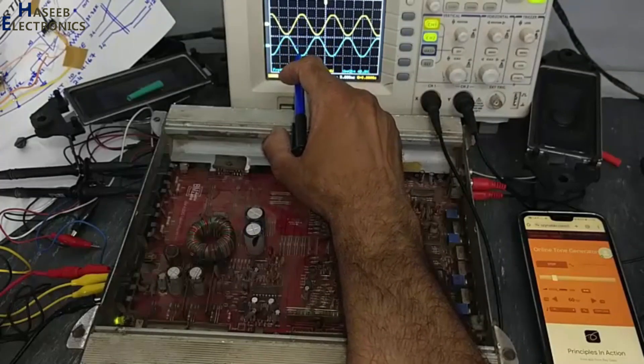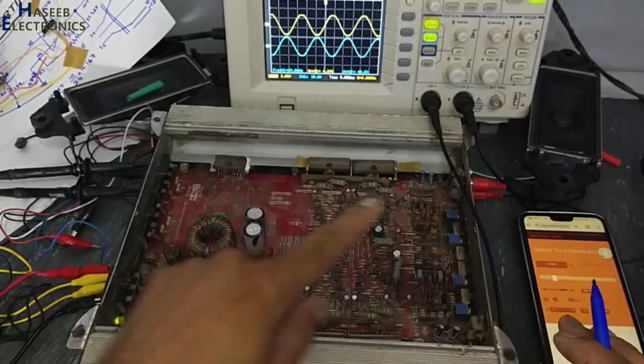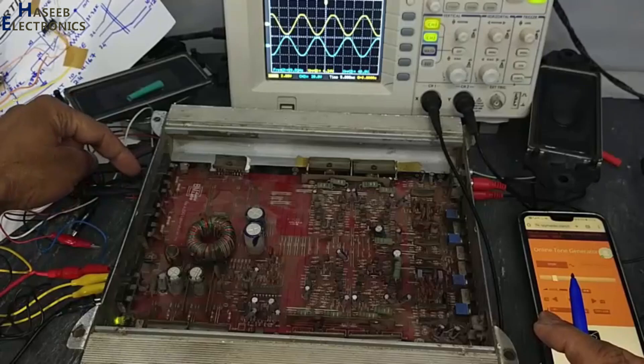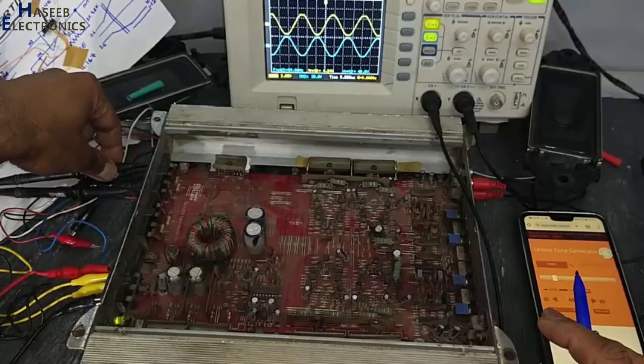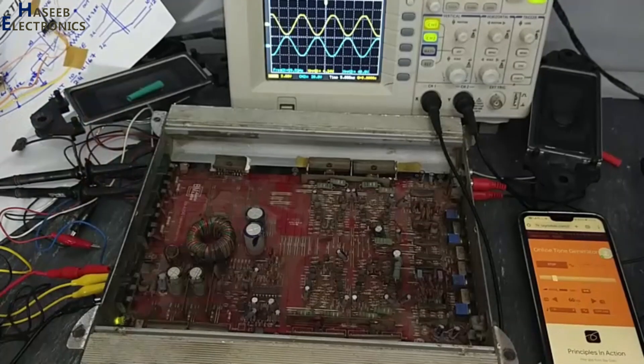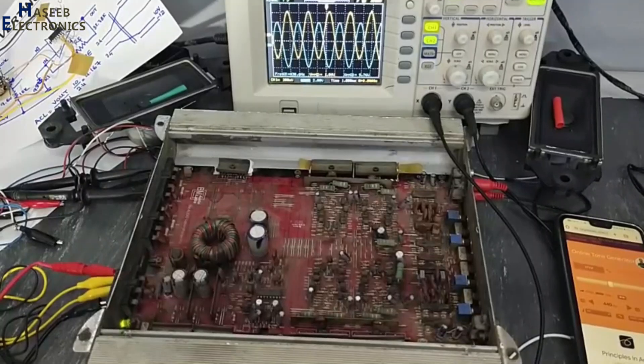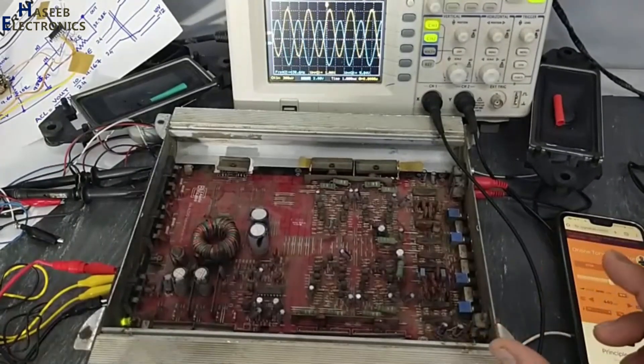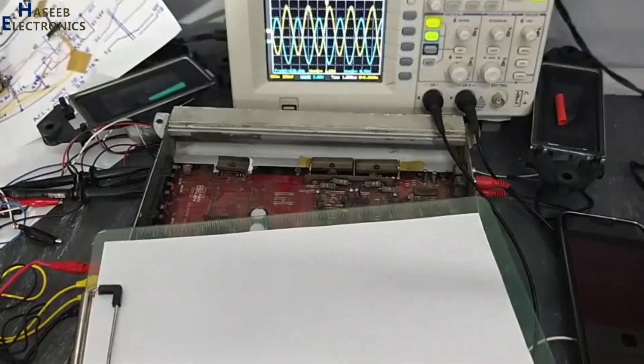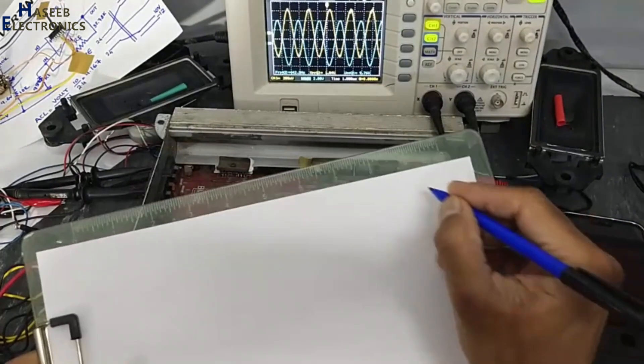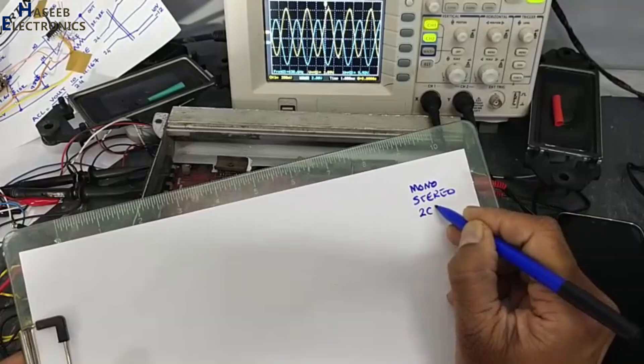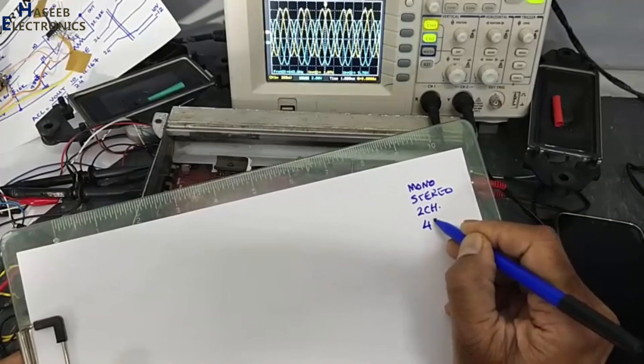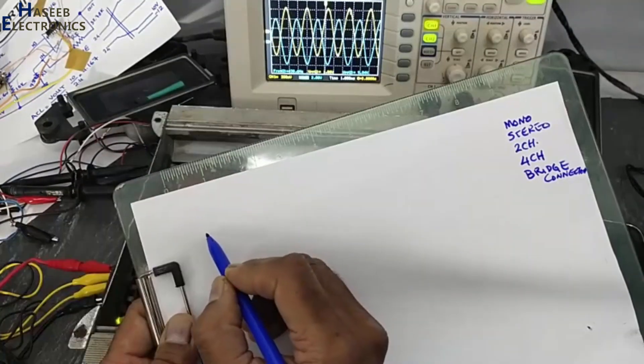42 volts here, 42 volts here. This is normal connection when we are connecting between common and one out, common and second out. Assalamu alaikum warahmatullahi wabarakatuh, friends welcome back to my channel. In this session we will see brief about audio systems. We will discuss mono, stereo, two channel, four channel, bridge connection.